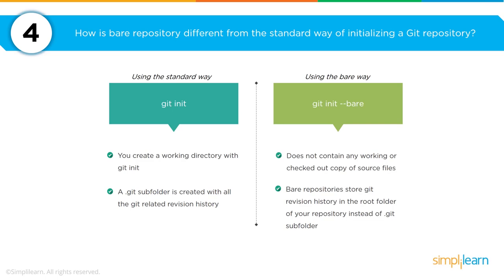A question you may be asked is the difference between a bare repository and a standard Git repository initialization. The standard way uses git init, which creates a working directory and a subfolder that stores all the revision history. In contrast, the bare way uses git init --bare, which does not contain any working or checked-out source files locally. The revision history is stored in the root folder rather than a subfolder.